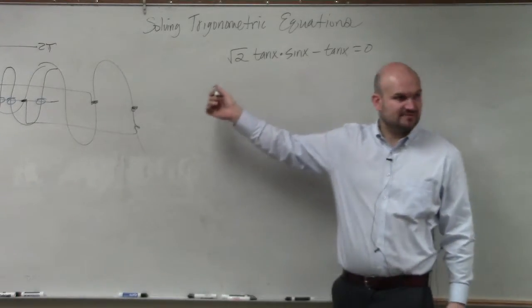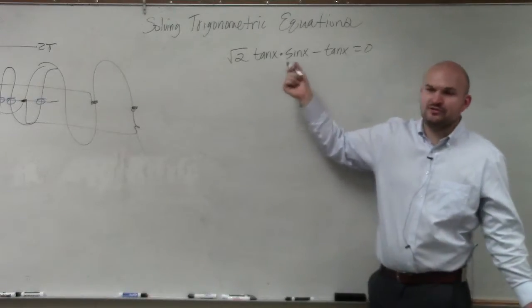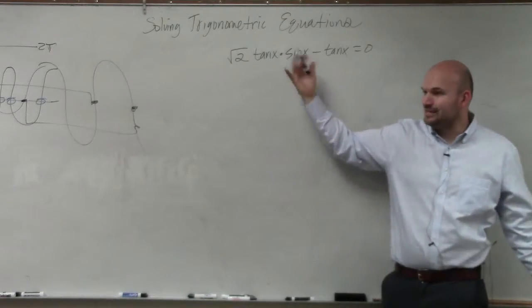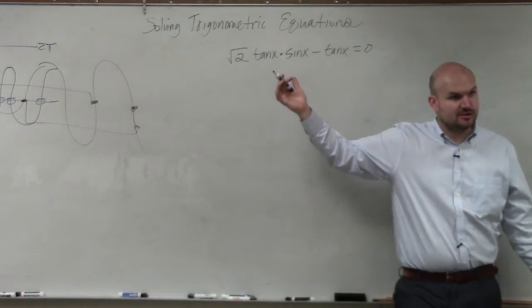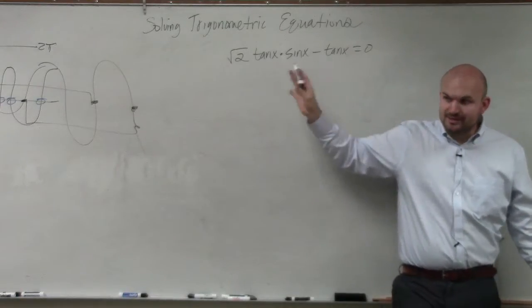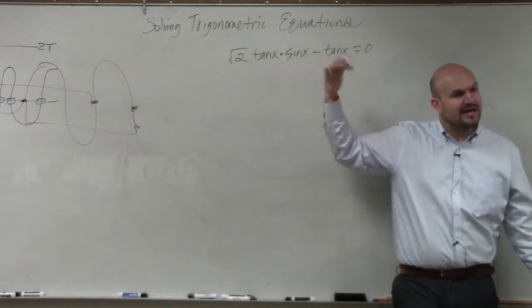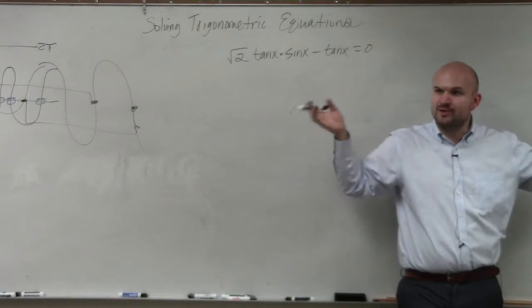Well, here, you guys can see we have multiple functions. We can't solve for sine or solve for tangent because then the other trigonometric function is going to be in the answer, correct? So the only thing we can do is make sure we set this equal to 0 and try to factor by using the 0 product property.